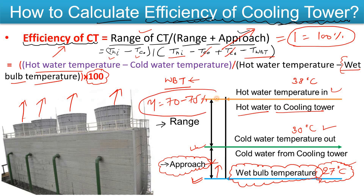Most of the time the efficiency of the cooling tower ranges from 70 to 75%, as we discussed in our last video. Wet bulb temperature is important because from a process point of view, if it increases, your margin reduces. If you have any doubt, please let me know in the comments box and I'll clear your doubt as soon as possible. Thanks for watching — keep learning.